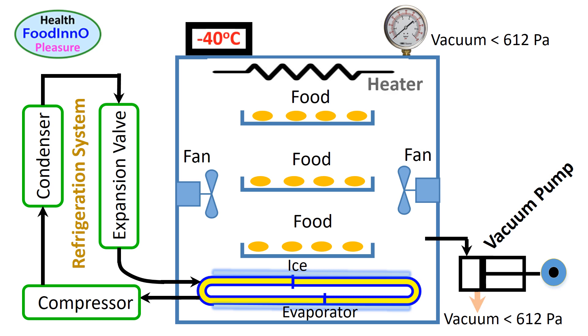We need to set the pressure below 612 Pascal so that ice could be sublimated to vapor. We could use a heater to set the freeze-drying temperature after achieving the vacuum pressure. For example, we can set the heater at 20 degrees C.